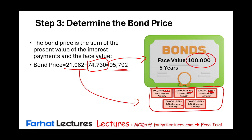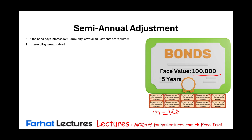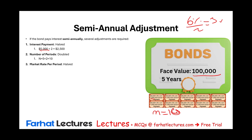Now let's look at a bond that pays semi-annual interest, which is more like a real bond. With a face value of $100,000, the coupon payment for a real bond is semi-annual. Therefore, several adjustments are required: N doubles from 5 to 10 periods, the interest payment is halved from $5,000 to $2,500 per period, and the market rate is halved from 6% to 3%. So when we go to the tables, we use n=10 and i=3%.